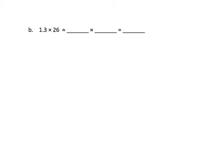So we have 1.3 times 26. We're going to round each one of these factors to their greatest place. 1.3 rounds to 1, and 26 rounds to 30. So we should expect our answer to be somewhere around 30.